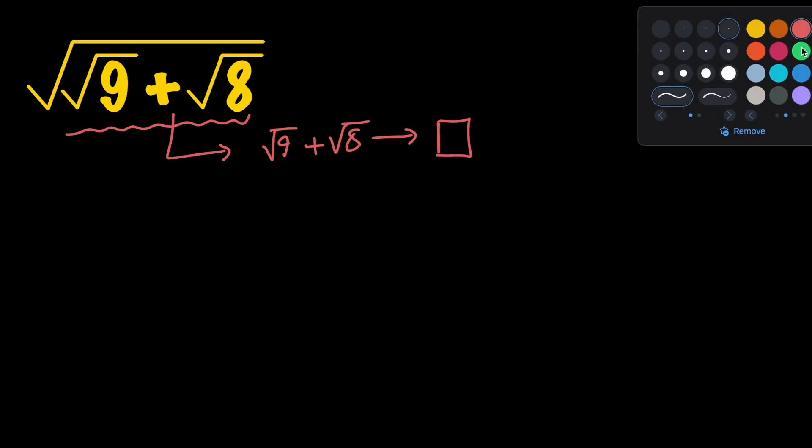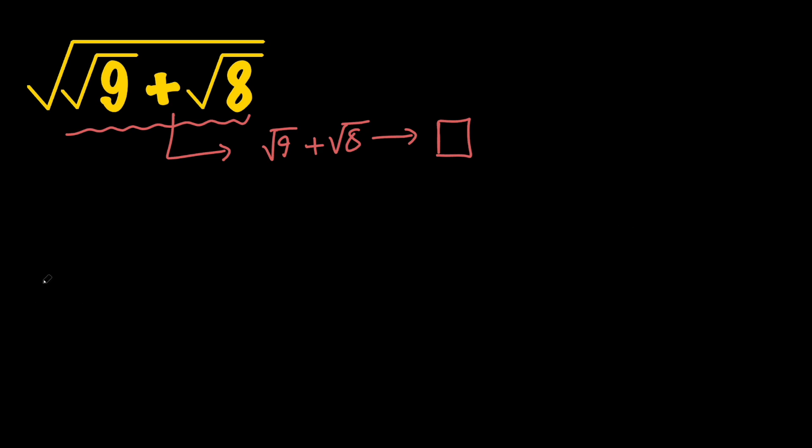The first thing I'm going to do is replace root 9 with 3, because we know that the square root of 9 is 3. So we have the square root of 3 plus root 8.